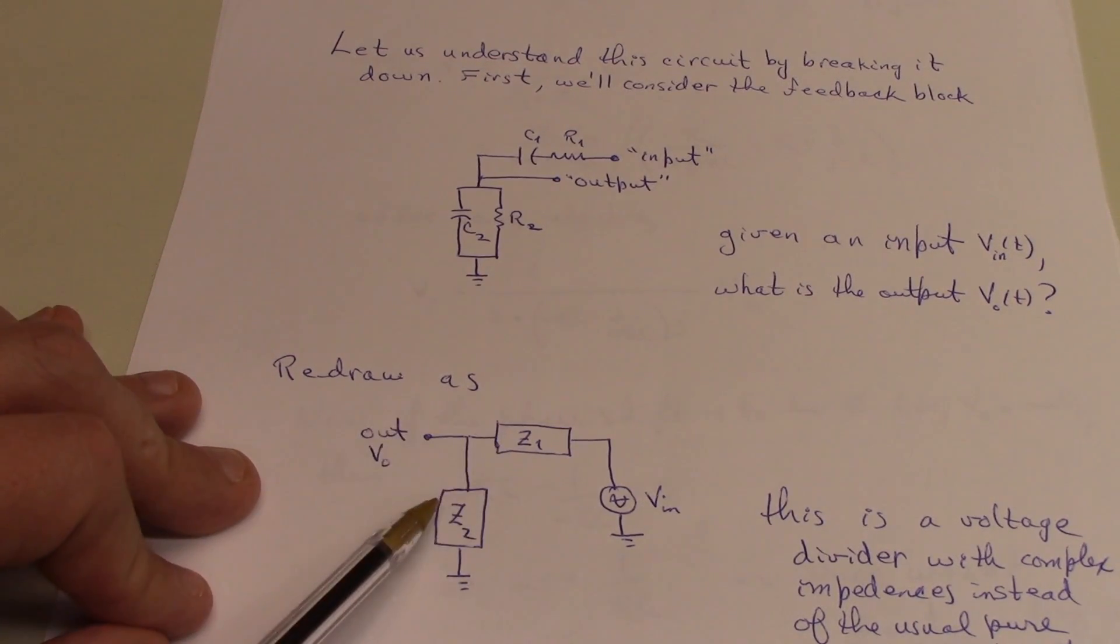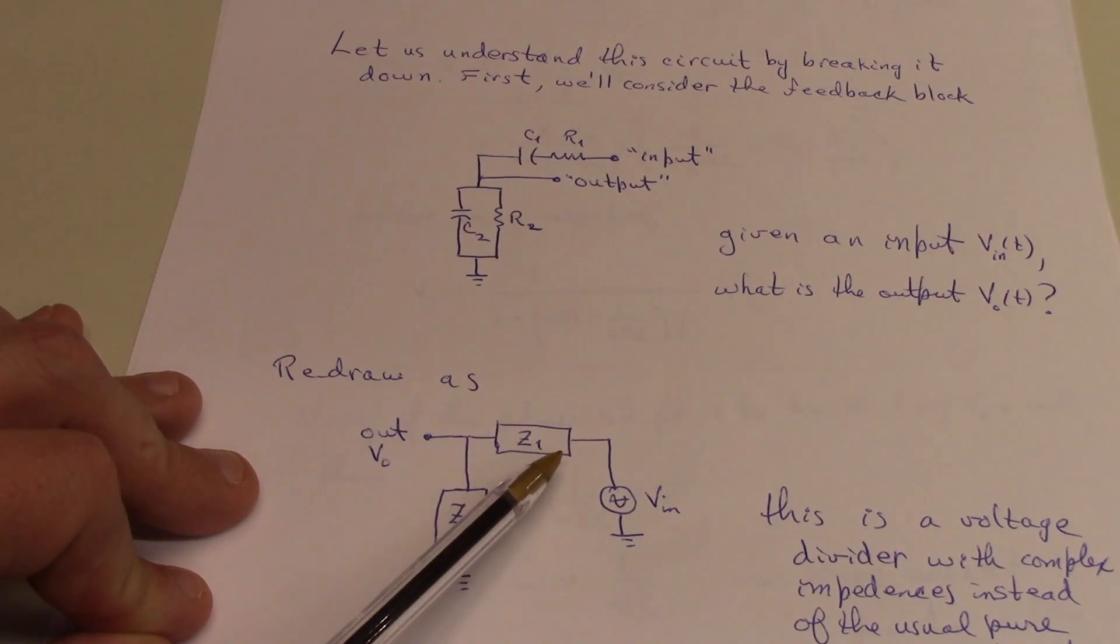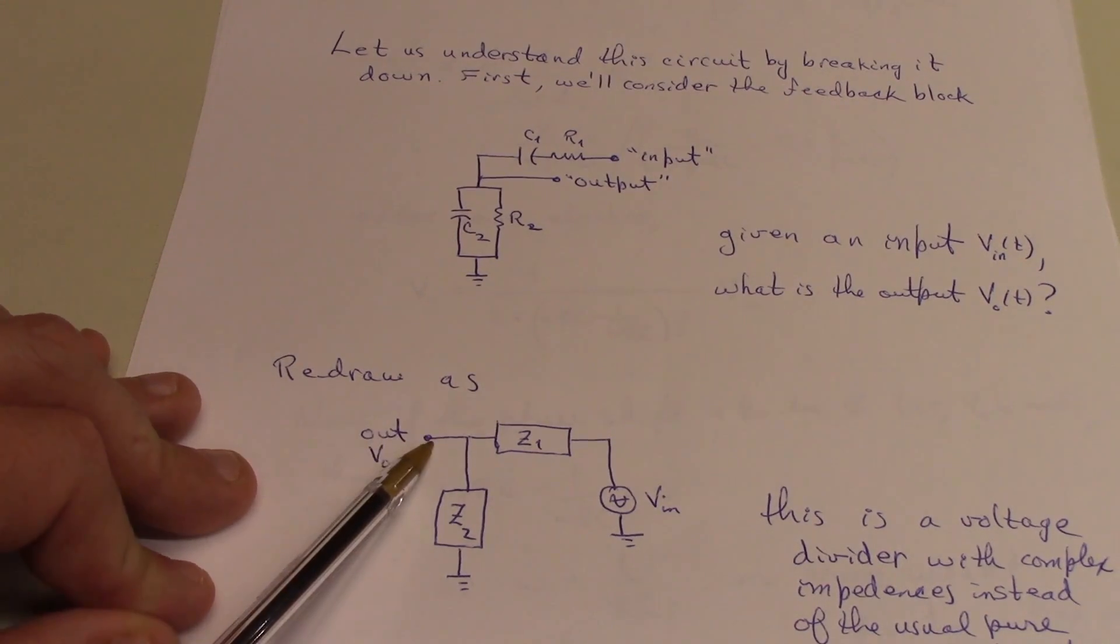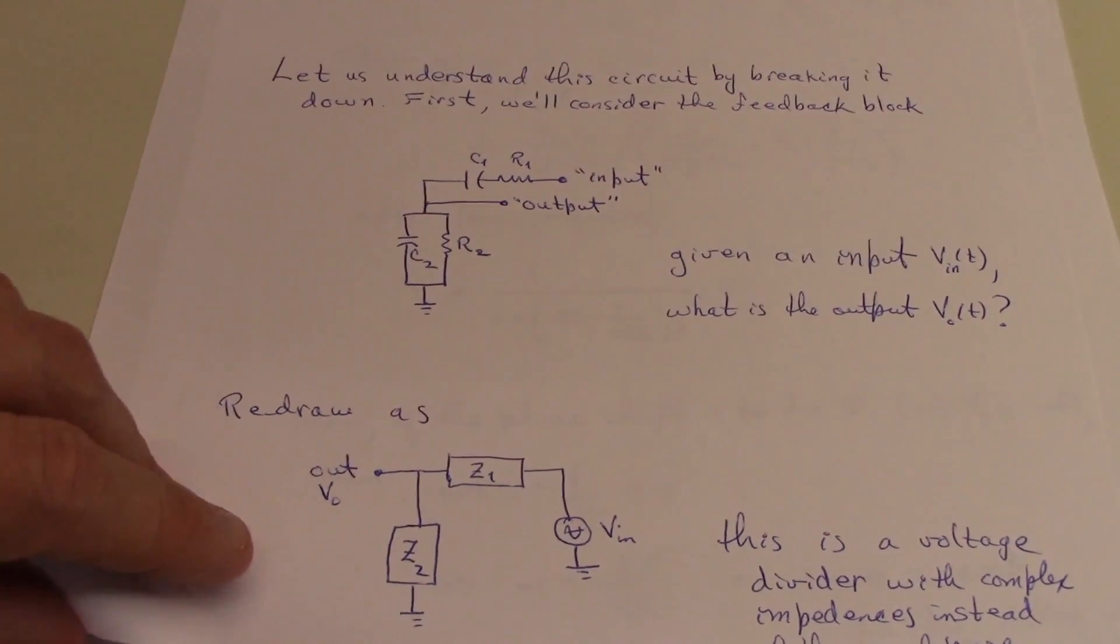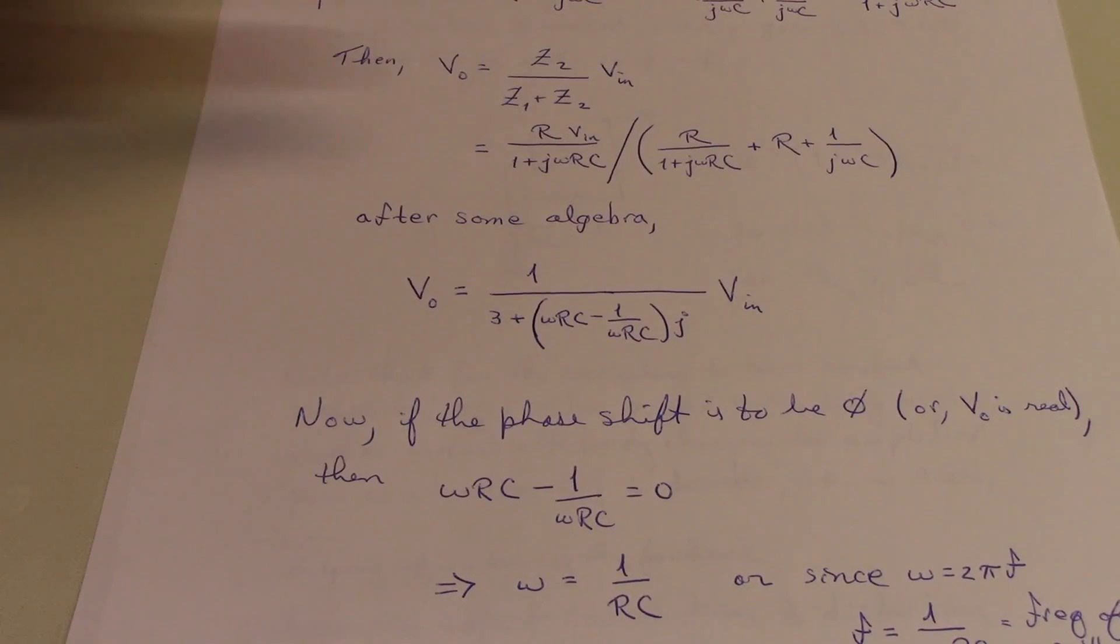When you look at the circuit this way, this becomes really nothing more than a voltage divider that we want to understand. The voltage output here in terms of the voltage input, which is oscillatory, and these two complex impedances.